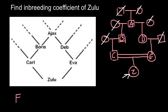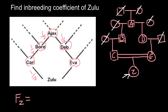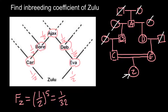So the simplest method to calculate the inbreeding coefficient of Zulu: F equals the number of nodes on the loop, excluding Zulu. How many do we have? 1, 2, 3, 4, and 5. Every time Ajax passes half of his genetic makeup, we expect one half to be passed, and another half would be passed by the other parent. So we can put one half at every step. The inbreeding coefficient of Zulu equals one half to the power of 5, and the inbreeding coefficient would be 1 over 32.